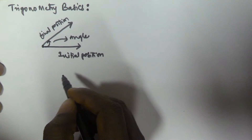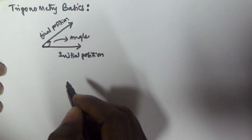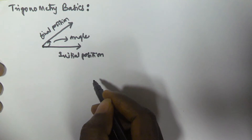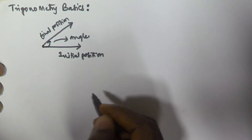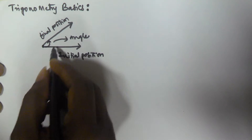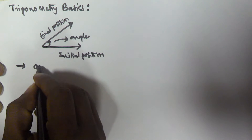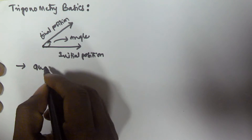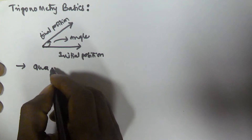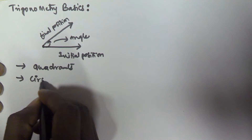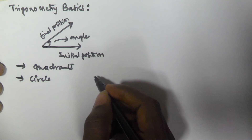This angle can be calculated with respect to the coordinate system or with respect to the circle. The coordinate system contains quadrants, and we can also measure the angle with respect to the circular system.